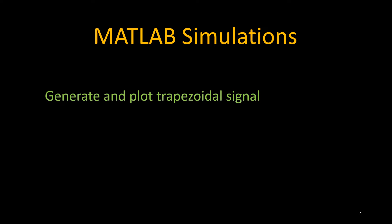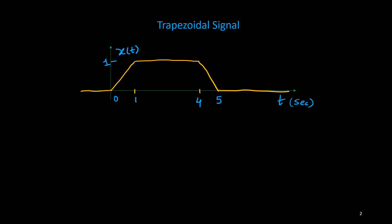In this video I will discuss how to generate a trapezoidal signal in MATLAB. I will consider this signal x(t), so here 0 to 1 it is increasing, then it will remain flat after 4 seconds.